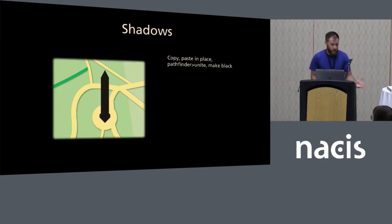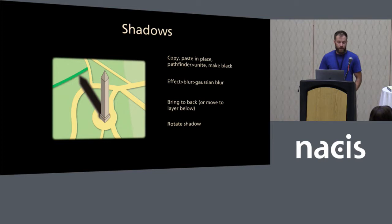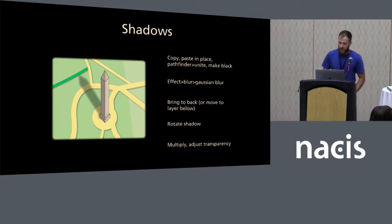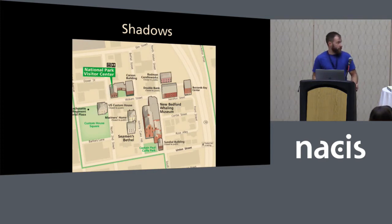To create shadows, you copy your layer, paste it in place, use Pathfinder Unite, make it black, give it a Gaussian blur, push it to the back, rotate your shadow, and adjust the transparency and multiply it. Then you have your shadow — I believe this is the Tercentenary Monument in Jamestown. It's very recognizable from far away because it's very tall. Going back to one of Tom Patterson's maps, I'm turning the shadows on and off to show how they help sit into the landscape.